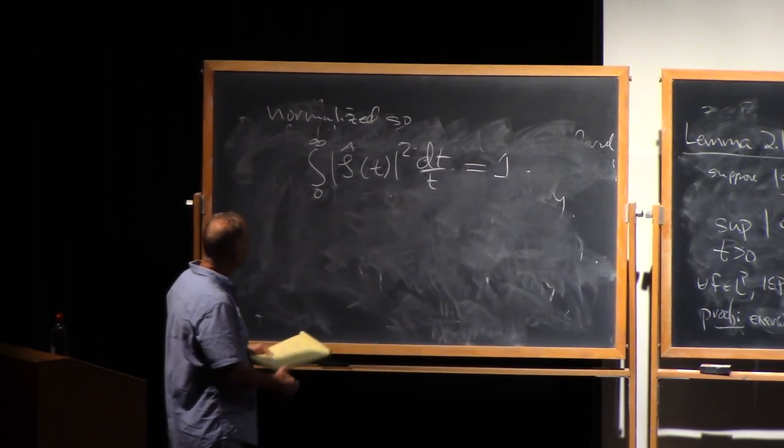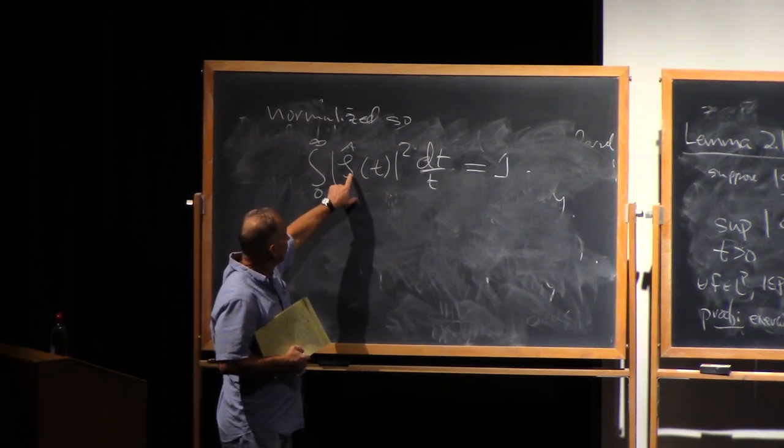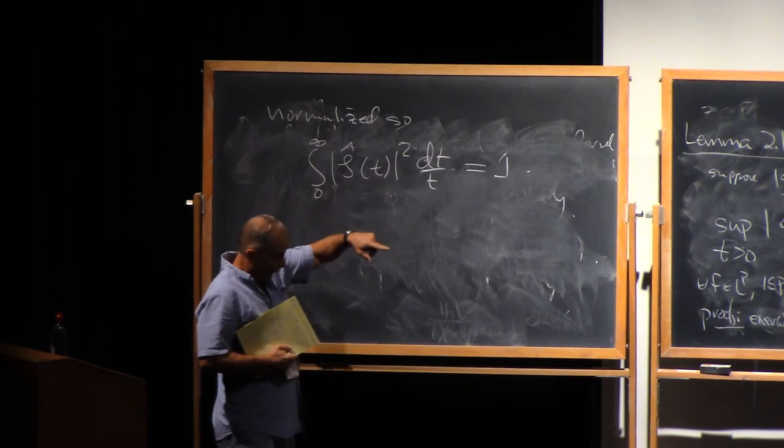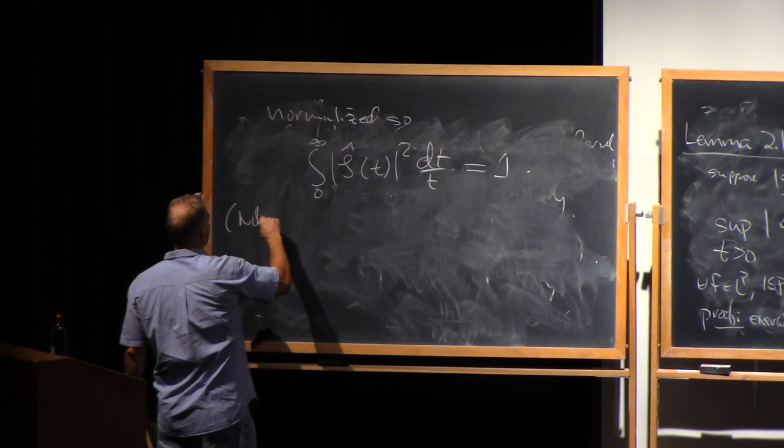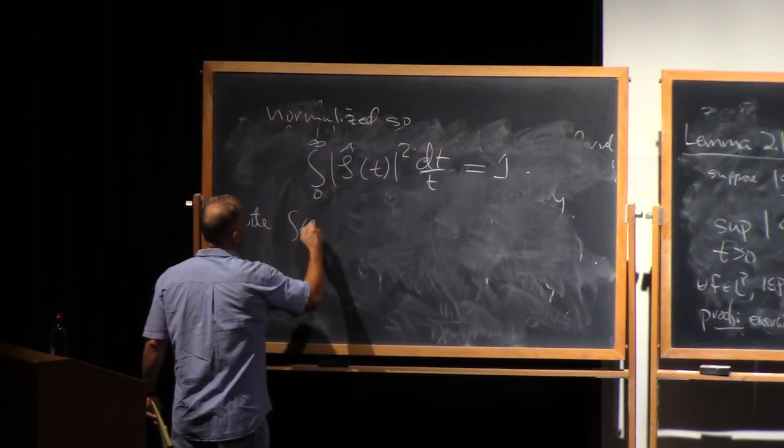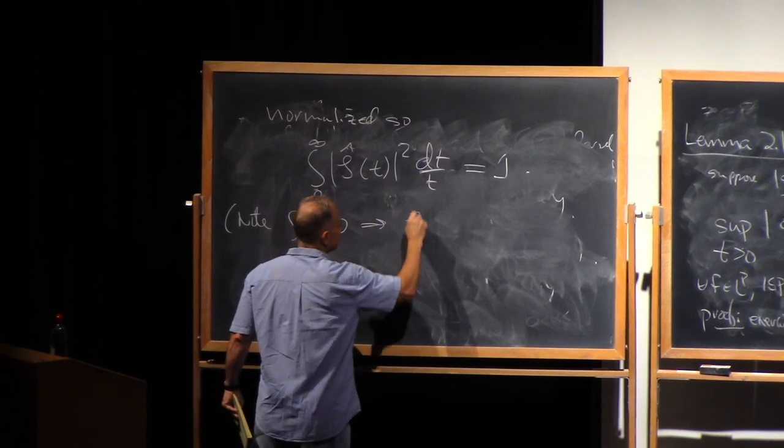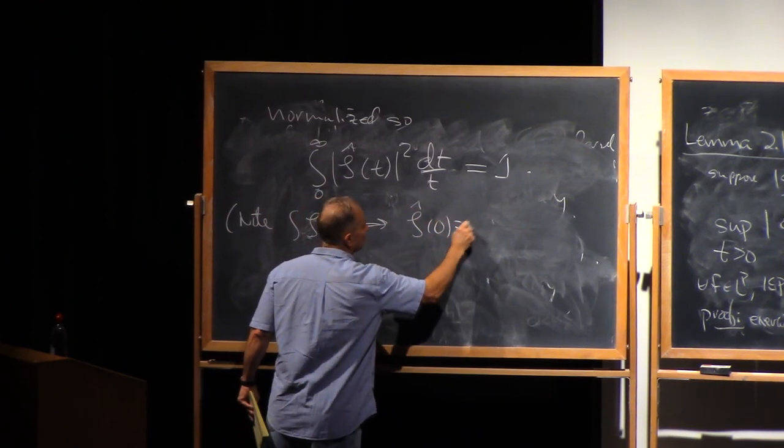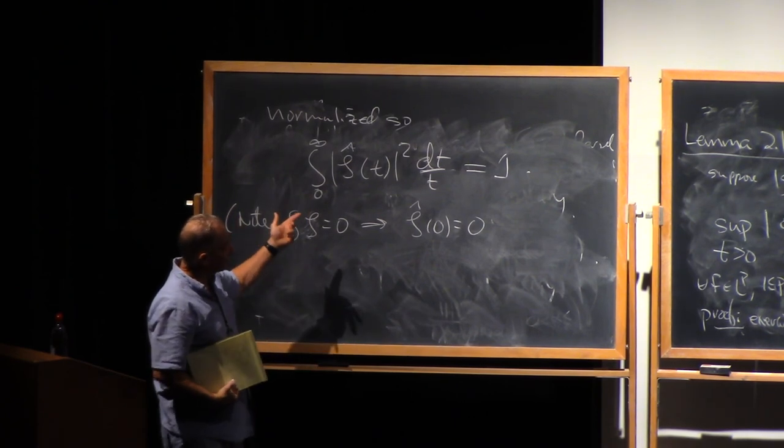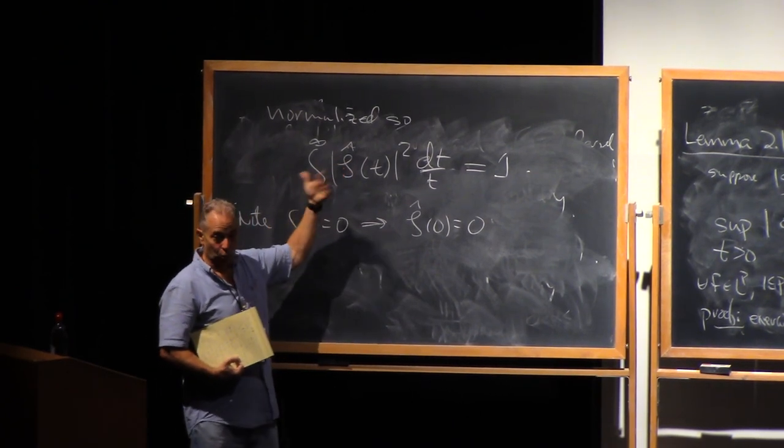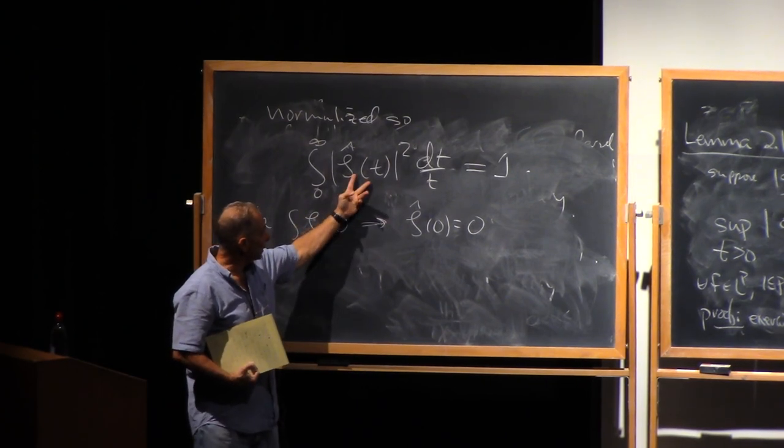So that the integral from zero to infinity of |ζ hat(t)|^2—I'm abusing notation because if ζ is real and radial, then the invariance properties of the Fourier transform tell us that also ζ hat is real and radial. And since it's a radial function, I'm abusing notation here and identifying it with a naturally associated function of the real line. We're going to normalize so that this is one. Why can we know that this is finite? Well, since the integral of ζ is zero, this says that ζ hat of zero equals zero, if you just think of the definition of the Fourier transform. And if ζ is C_0^∞, then ζ hat is a Schwartz function—infinitely smooth and rapidly decaying. Since it's rapidly decaying, this...